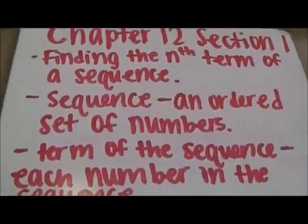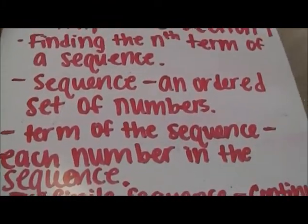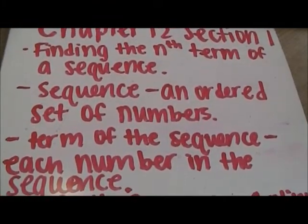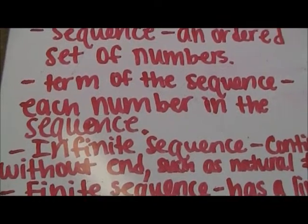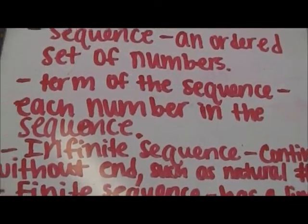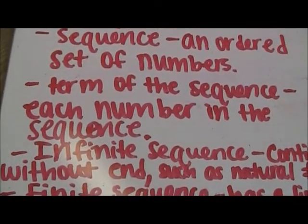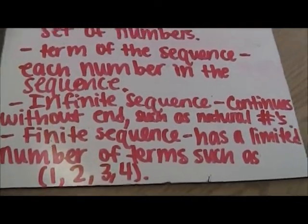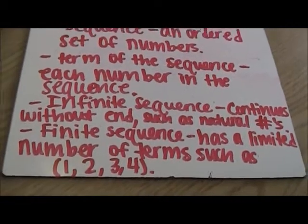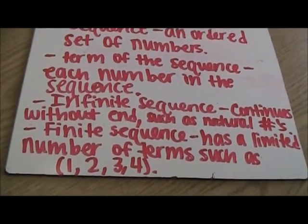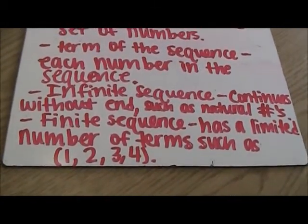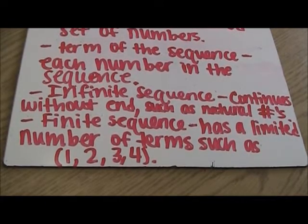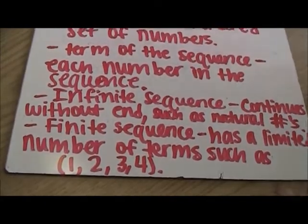Some definitions we have for you: a sequence is an ordered set of numbers, and the term of a sequence is each number in the sequence. An infinite sequence continues without end, such as natural numbers. A finite sequence has a limited number of terms, such as 1, 2, 3, and 4.